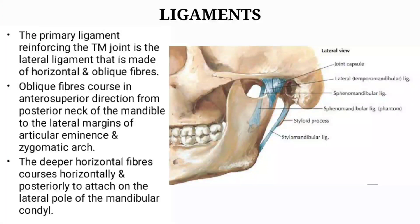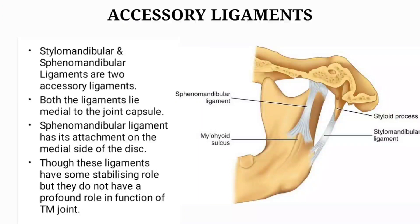Now let us discuss the ligaments. The primary ligament reinforcing the TMJ is the lateral ligament, which is made of horizontal and oblique fibers. The oblique fibers course in an anterosuperior direction from the posterior neck of the mandible to the lateral margins of the articular eminence and zygomatic arch. The deeper horizontal fibers course horizontally and posteriorly to attach on the lateral pole of the mandibular condyle. The accessory ligaments are the stylomandibular and sphenomandibular ligaments, both lying medial to the joint capsule. The sphenomandibular ligament has its attachment on the medial side of the disc. Though these ligaments have some stabilizing role, they do not have a profound role in the function of the temporomandibular joint.